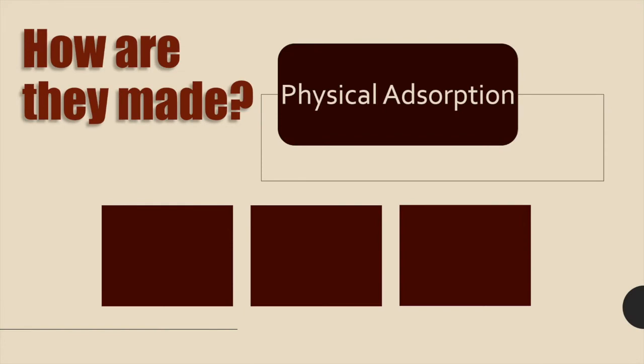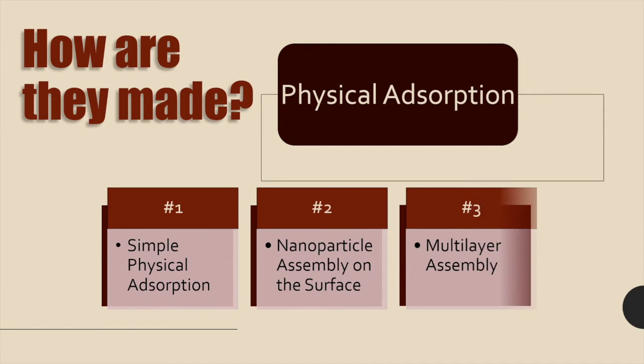The second way is through physical adsorption. Unlike absorption, adsorption makes a thin layer on top of the fiber. There are three different ways to get physical adsorption on drugs and fibers. Number one, simple physical adsorption. Once your fiber is made, you place a drug on top of the fibers and leave them until they adsorb. Number two, nanoparticle assembly on the surface. This is done by spraying the drug on the polymers.